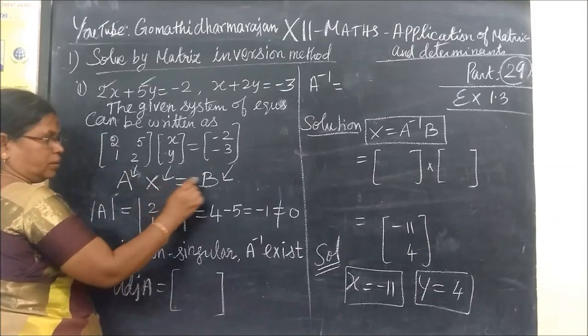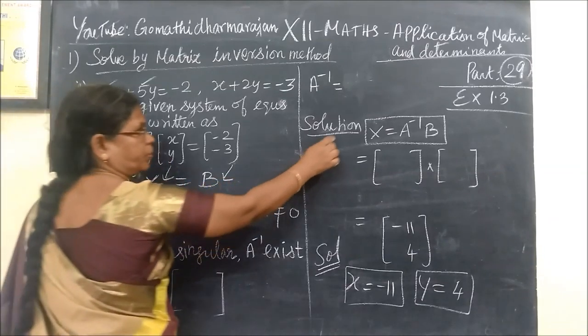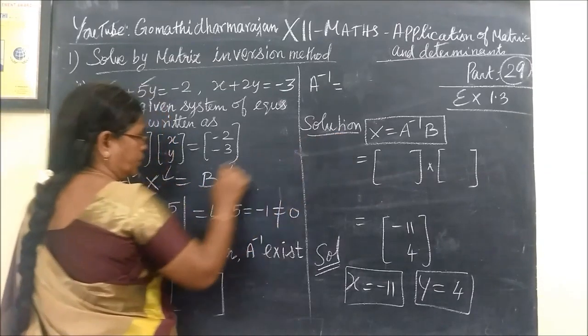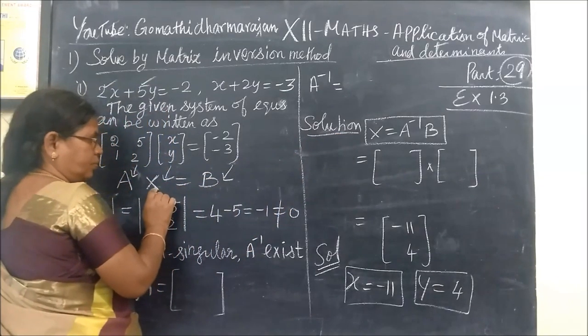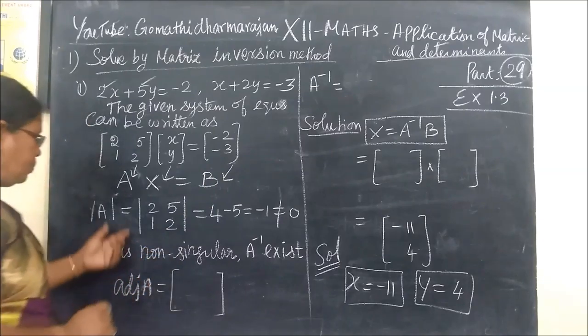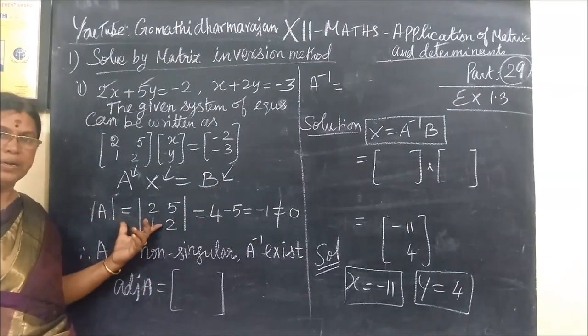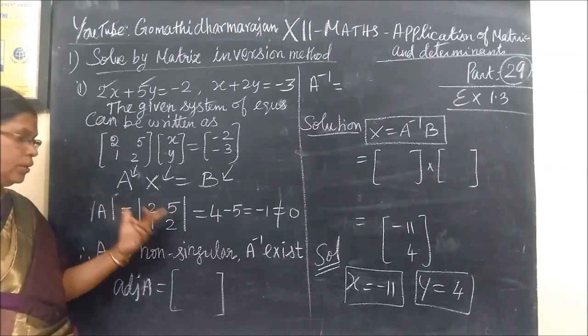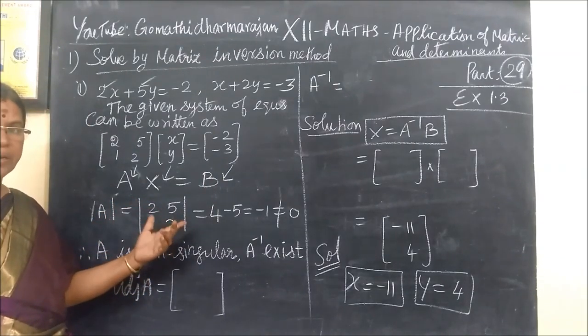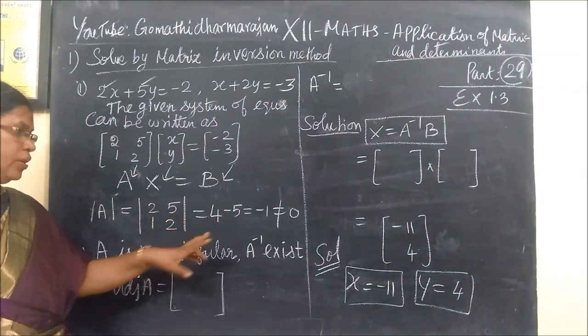This is the constant. In the constant matrix B, and in the matrix A, and in the variables X and Y, I bring in the capital X. For the solution, X equals A inverse B.